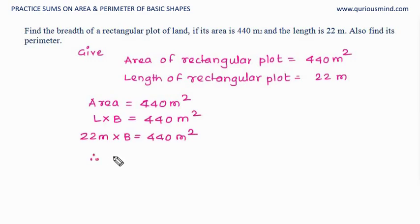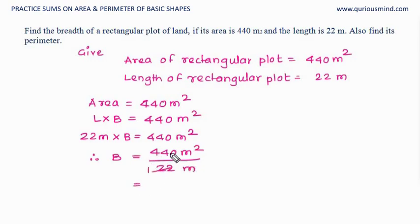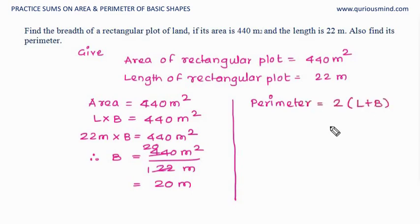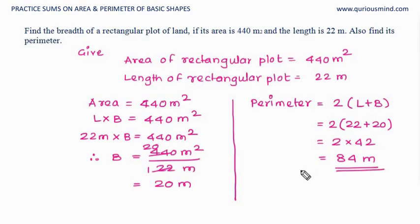Therefore, breadth equals 440 divided by 22. 22 ones are 22, 22 twos are 44, giving us 20 meters. Meter square divided by meter gives meter. So breadth of the rectangular plot is 20 meters. Now that we know length and breadth, we can find the perimeter: 2 times (length plus breadth) equals 84 meters.